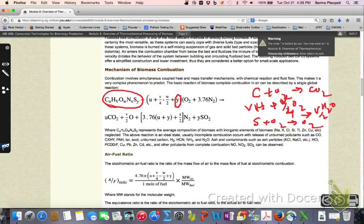So U moles of carbon which is there in the biomass here will require U moles of oxygen. Hydrogen is one quarter, so that's what we have from stoichiometry over here if you look at. You need V over four. However,